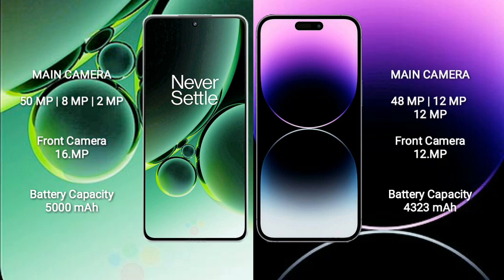OnePlus Nord 3 has a 5000mAh battery with 80W fast charging support. iPhone 14 Pro Max has a 4323mAh battery with 30W fast charging support.